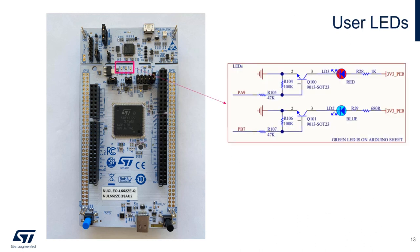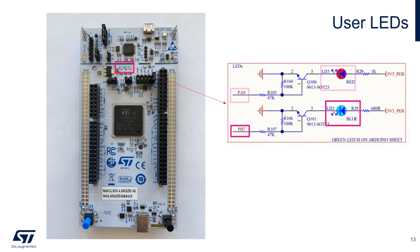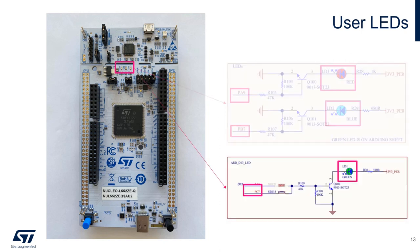There are three user-accessible LEDs on the Nucleo board. LD3, a red LED connected to PA9. LD2, a blue LED connected to PB7. And finally, LD1, a green LED connected to PC7.